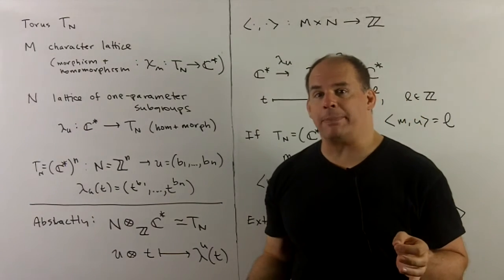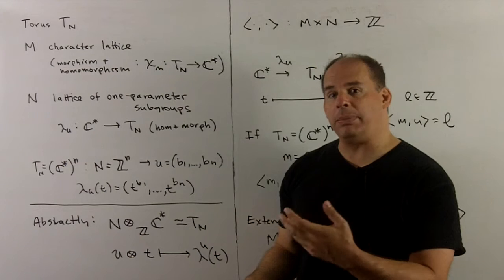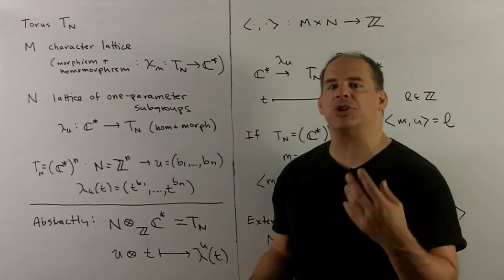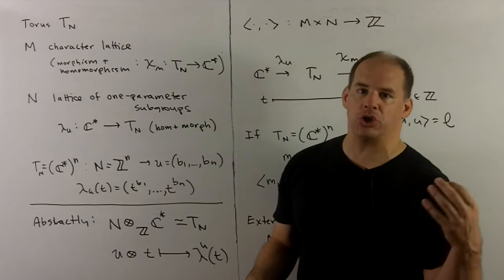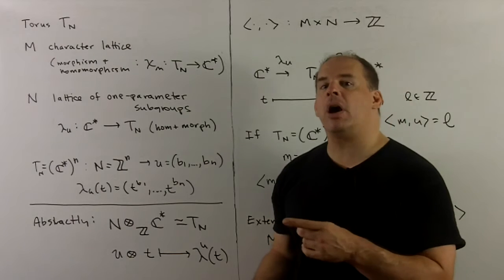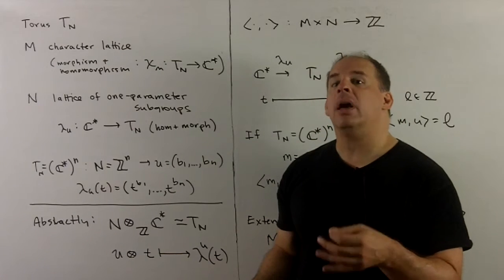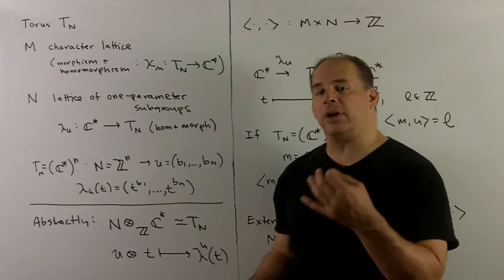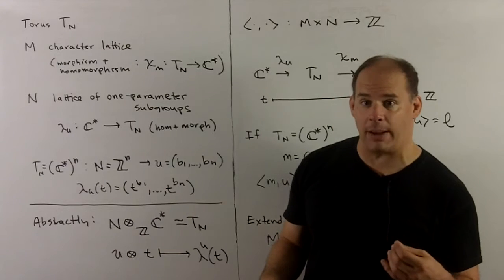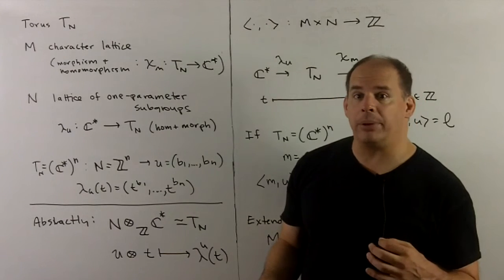One of the key principles of mathematics is to take complicated, difficult subjects and try to turn them into workable, tractable subjects. That's going to be part of the beauty of toric varieties. Underlying the theory of toric varieties is the language of convex geometry. So let's set that up.